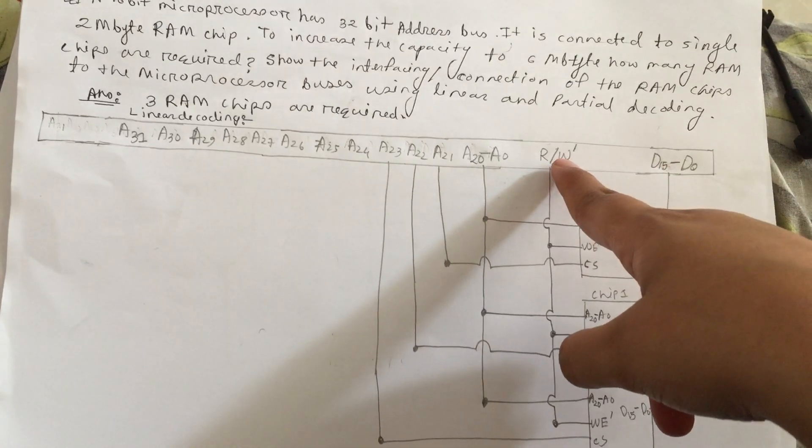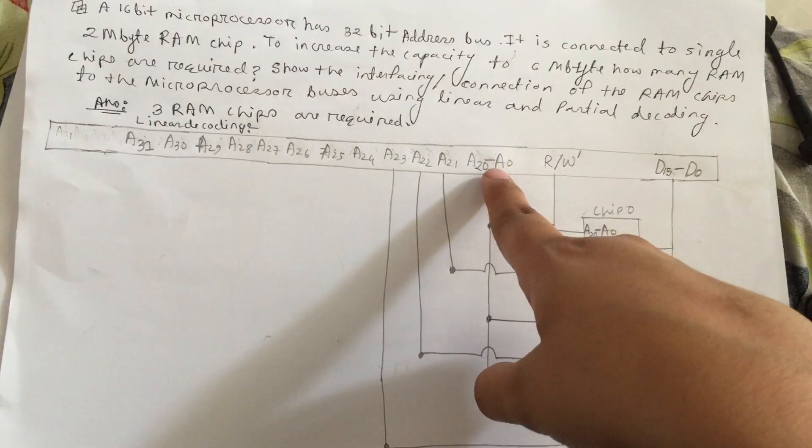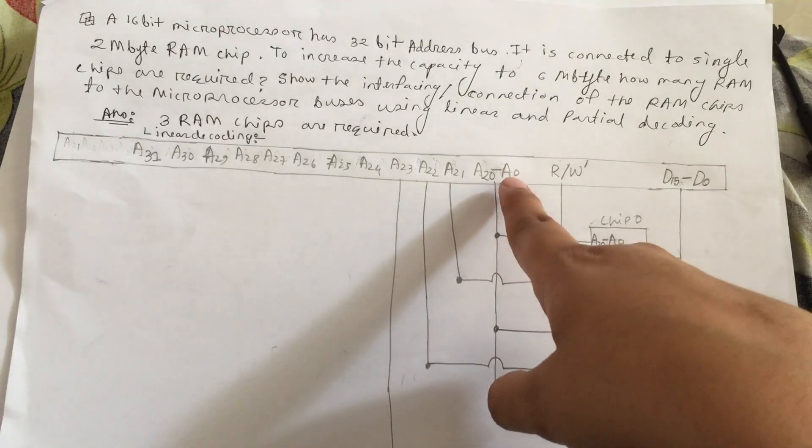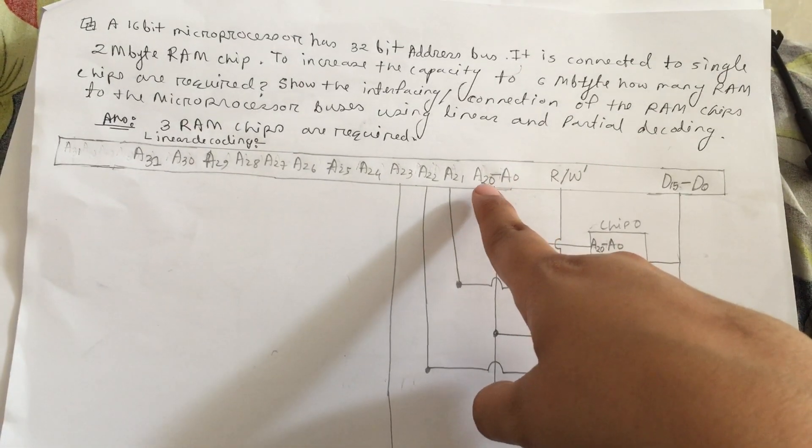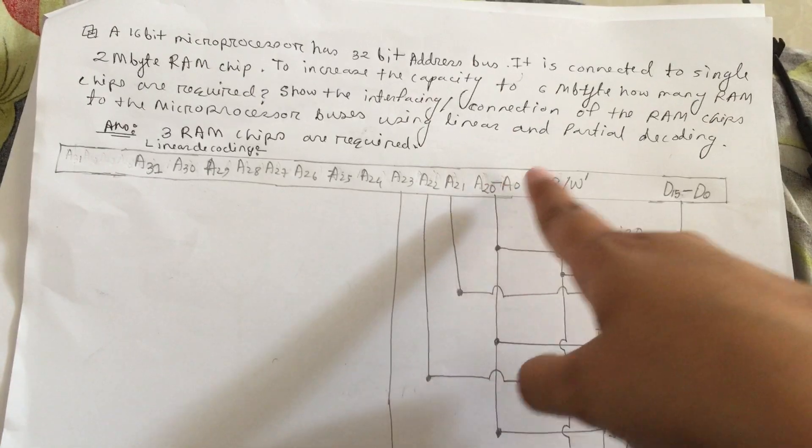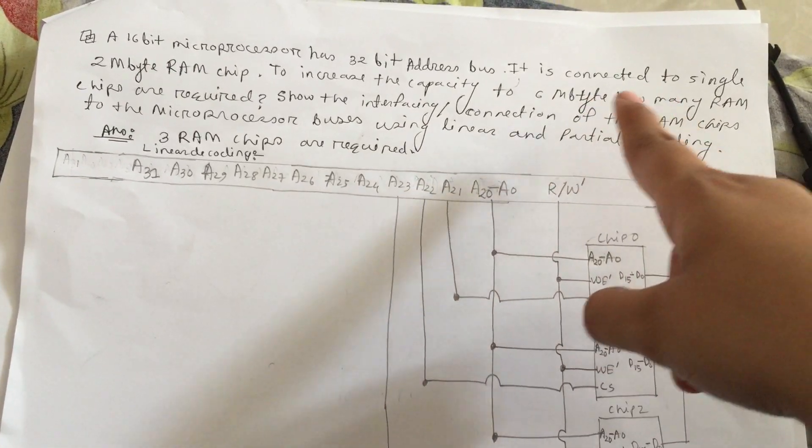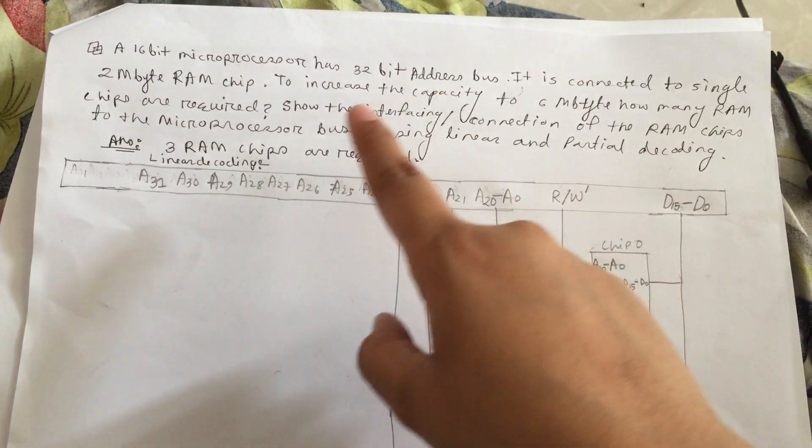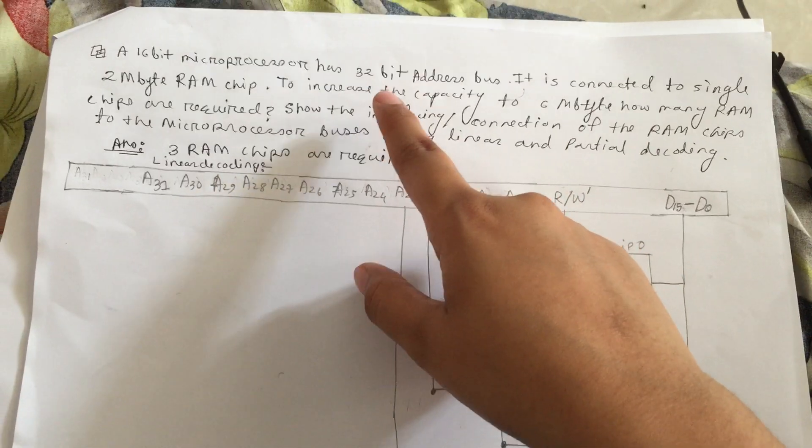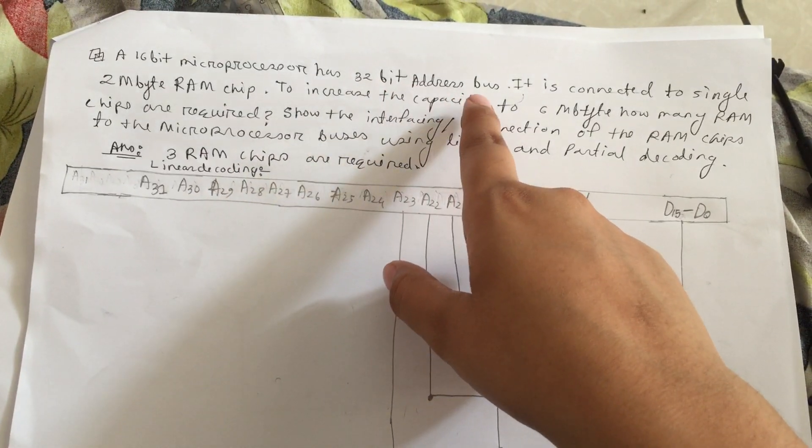Read and write operation are shown, and here I have taken a0 to a20. Why a0 to a20? Because here is 32-bit address bus, we have to take 32-bit addresses.